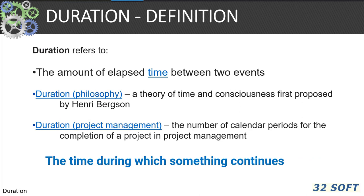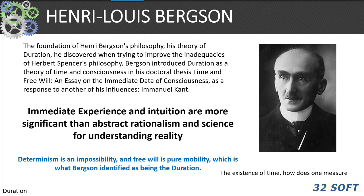Let's consider the concept of duration — another time concept represented in QAD. Duration refers to the amount of elapsed time between two events, the time during which something occurs. It is a theory of time and consciousness first proposed by the Frenchman Henri Bergson. Henri Bergson (1859–1941) was a French philosopher who said determinism is an impossibility; free will is pure mobility, which he identified as the duration.